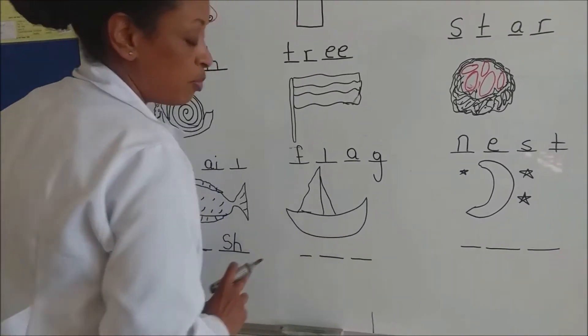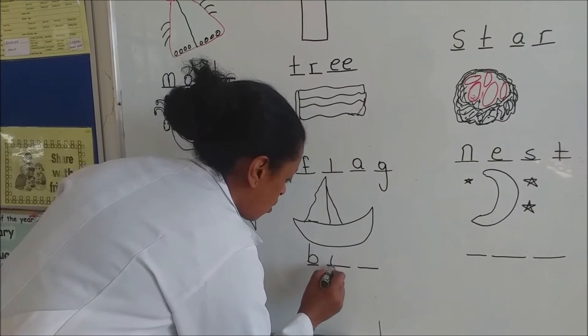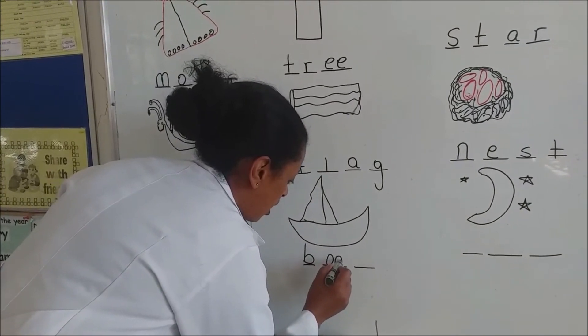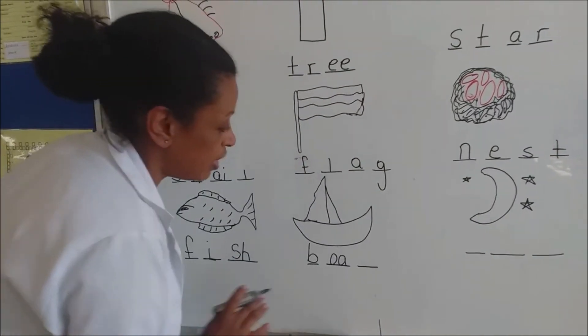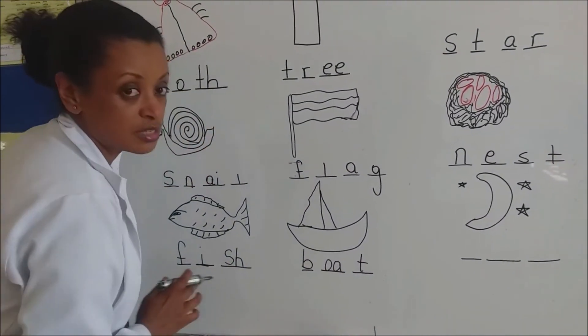This is a boat. Let's write boat. B-O-A. It is a vowel pair. T. Boat. Boat.